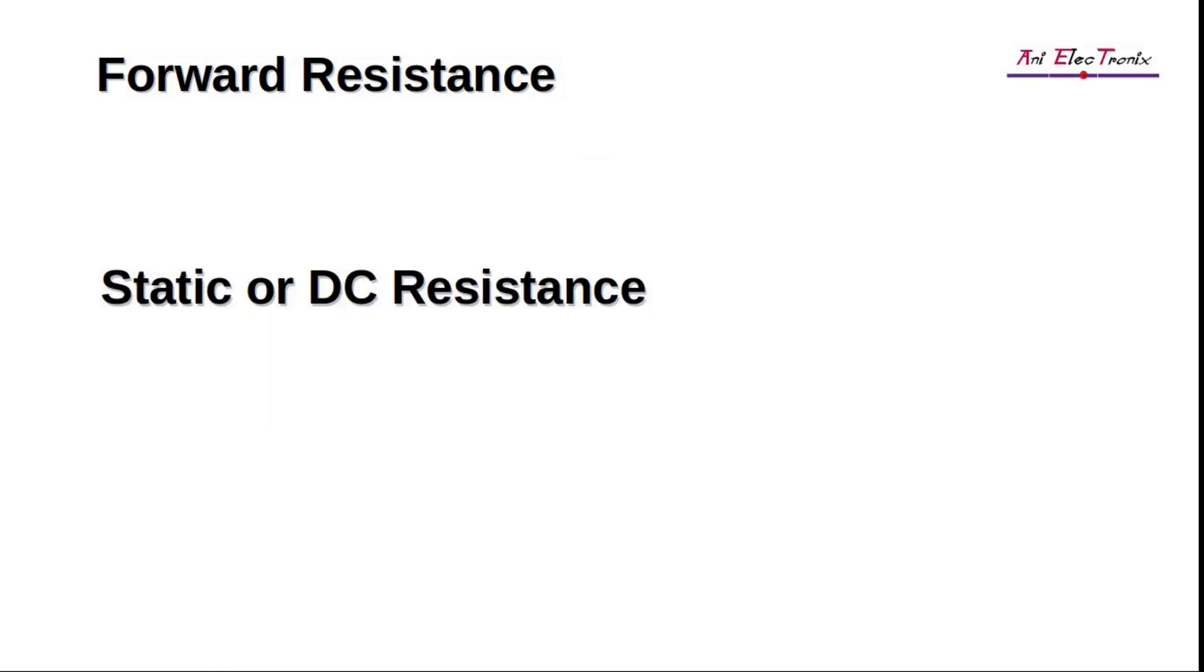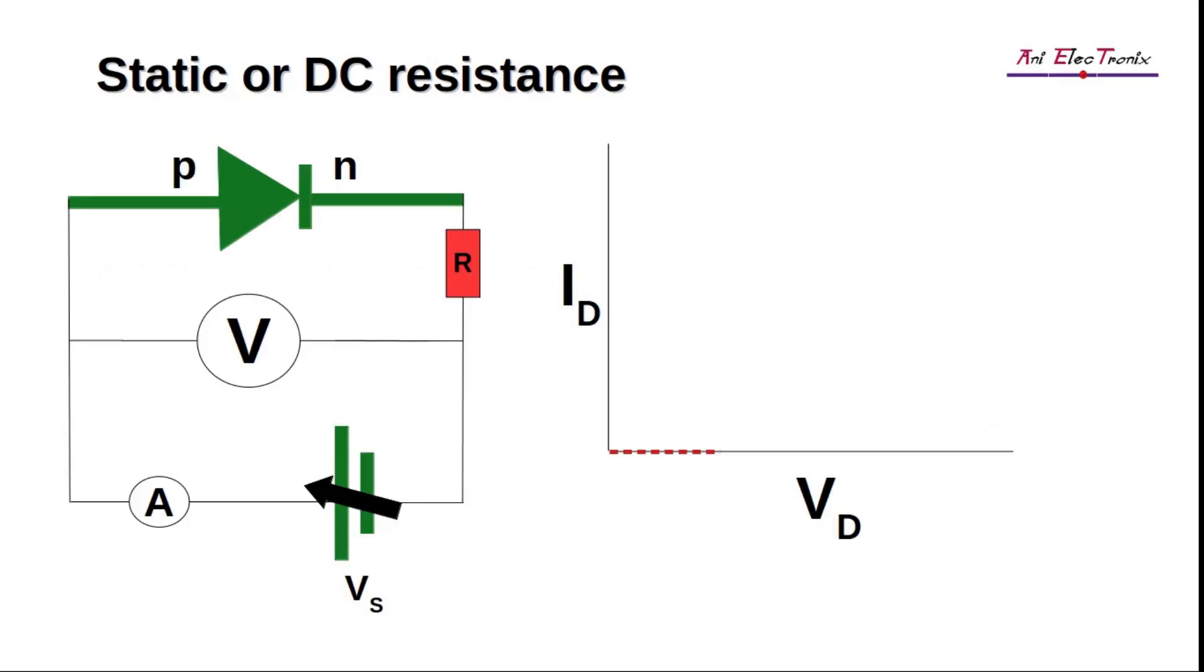We can see static or DC resistance and AC or dynamic resistance in forward bias mode. Static or DC resistance occurs when the P-N junction diode is applied with a forward DC voltage. This type of circuit has a single direction of current flow.